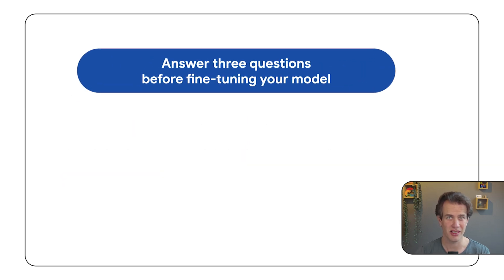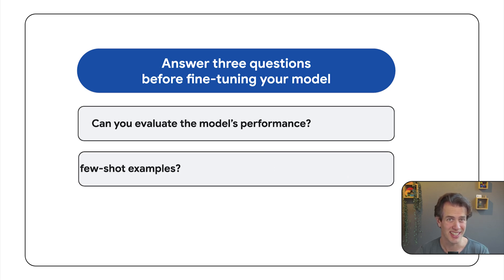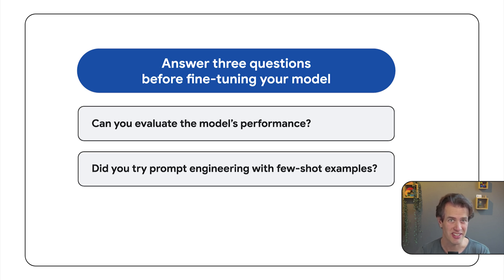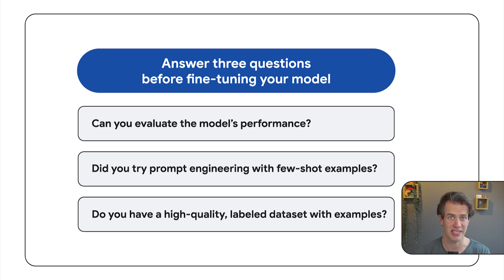So let's say you think all of this is great and you want to start fine-tuning. Ask yourself three questions. One, do you have a way to evaluate the performance of the model on the task you're interested in? If not, how would you know fine-tuning works? Two, did you already try prompt engineering with a few examples in the prompts? If you didn't, do that first. And then three, do you have a high-quality labeled dataset with examples? You need that for fine-tuning. So if you don't, it's going to be very hard to fine-tune. Now if you answered yes to all three questions, it's fine to start fine-tuning.